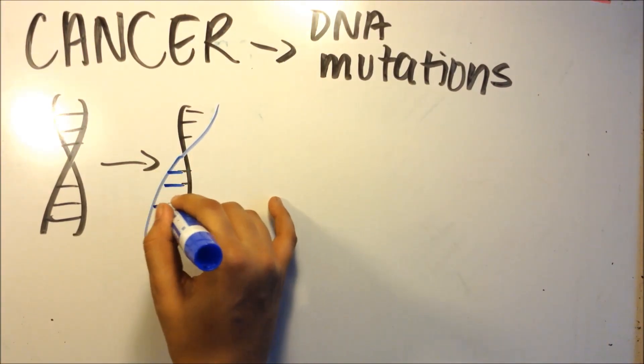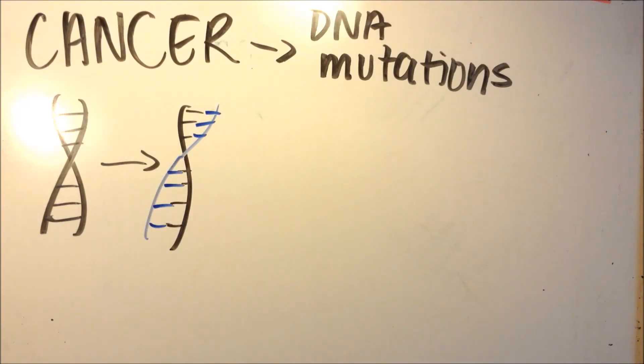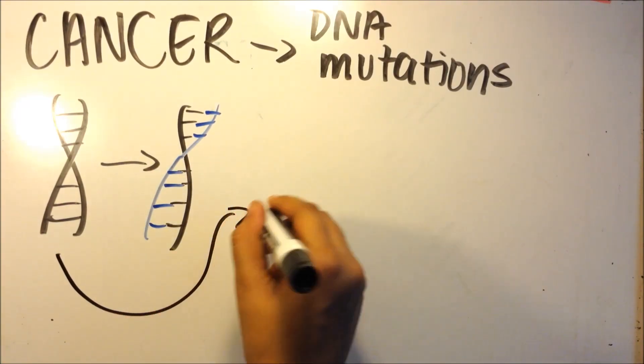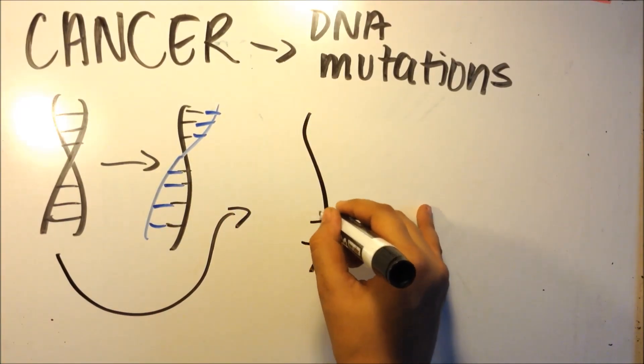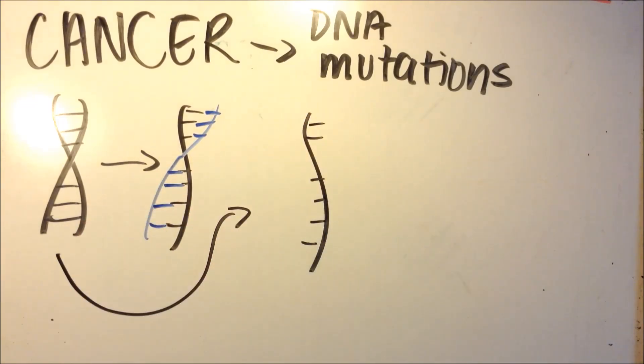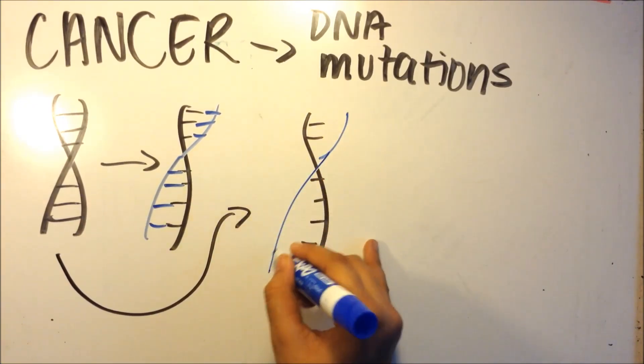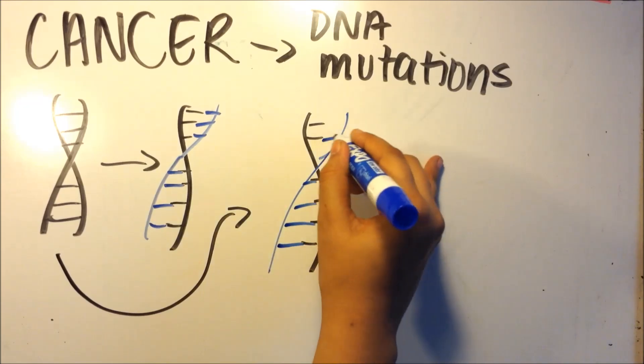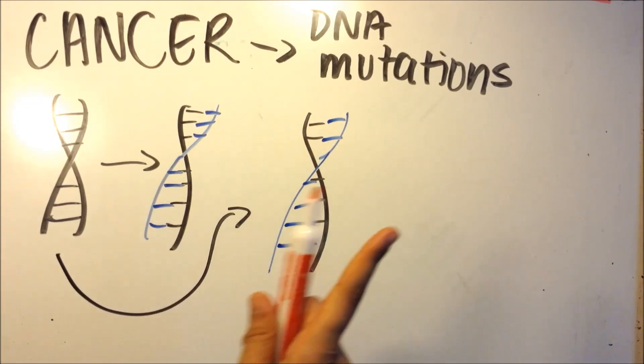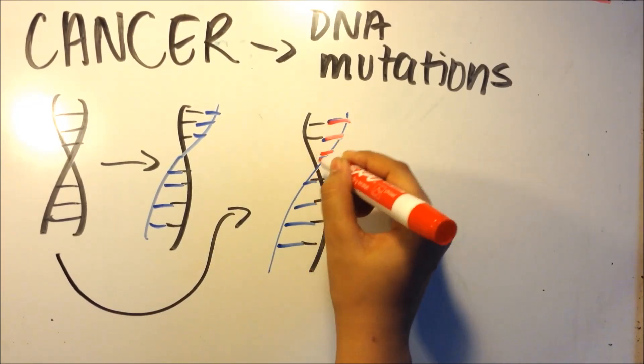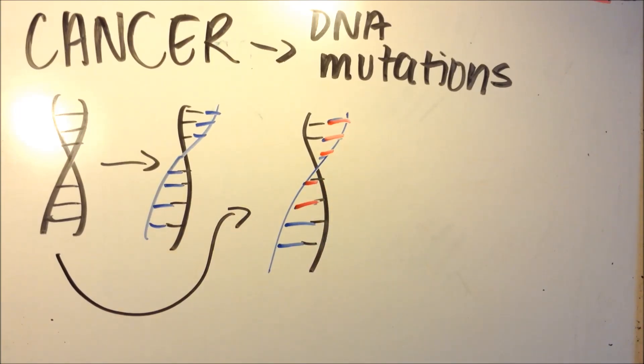When a DNA mutation occurs though, the same thing is going to happen. We're going to have a strand of our old DNA and a strand of our new DNA, but in this new DNA, some of the base pairs are going to have errors, and that's going to cause the cell to code for things it shouldn't be coding for normally.